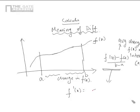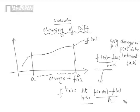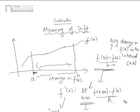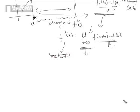We extended this average change and got f' to be the limit as h tends to 0 of f(x+h) minus f(x) divided by h. If we observe closely, f(b) minus f(a) divided by b minus a is the average change because we are doing it over a big interval. But f' is the same difference divided by the length of the interval for a very, very small region — that is the instantaneous change.